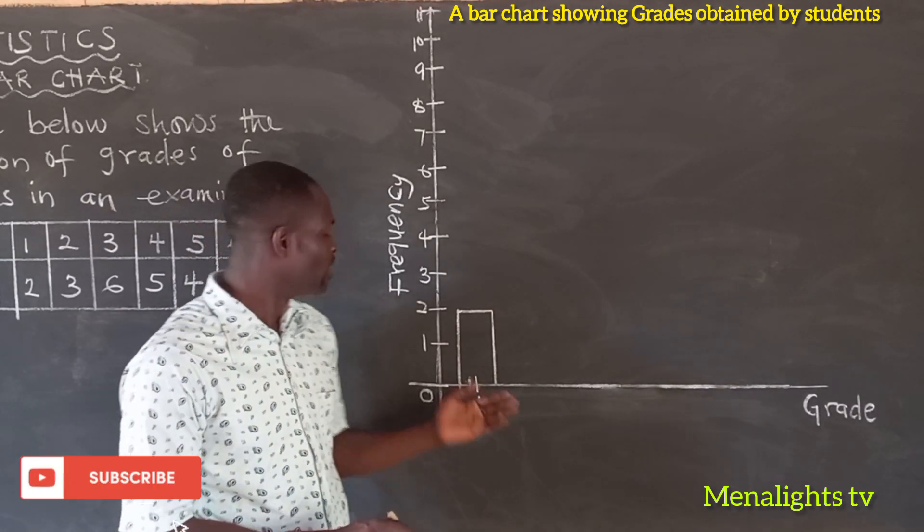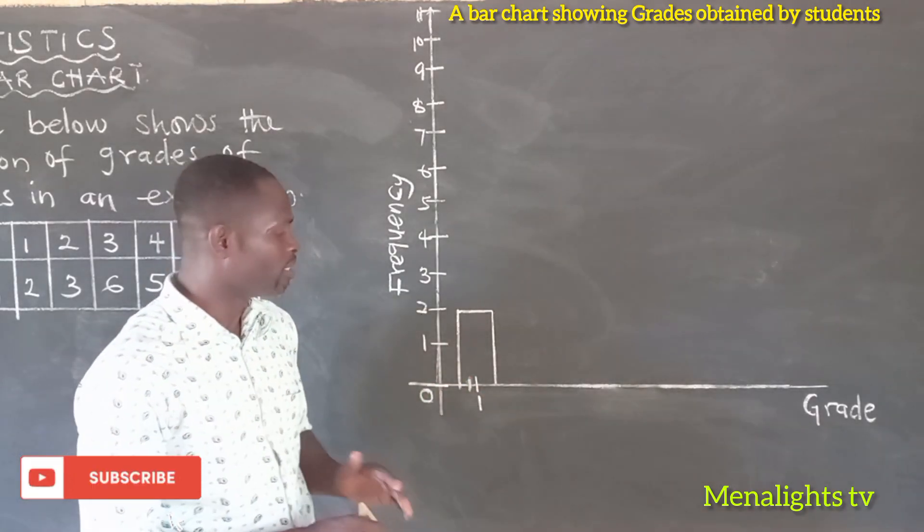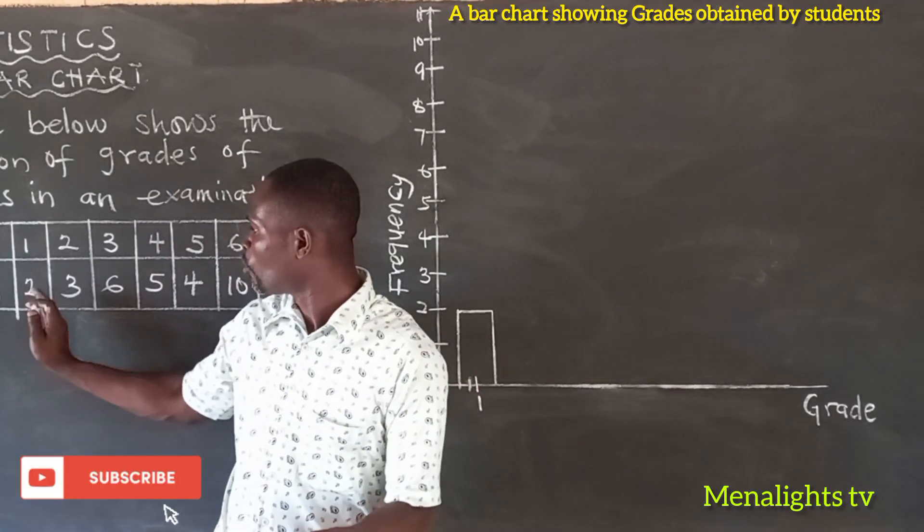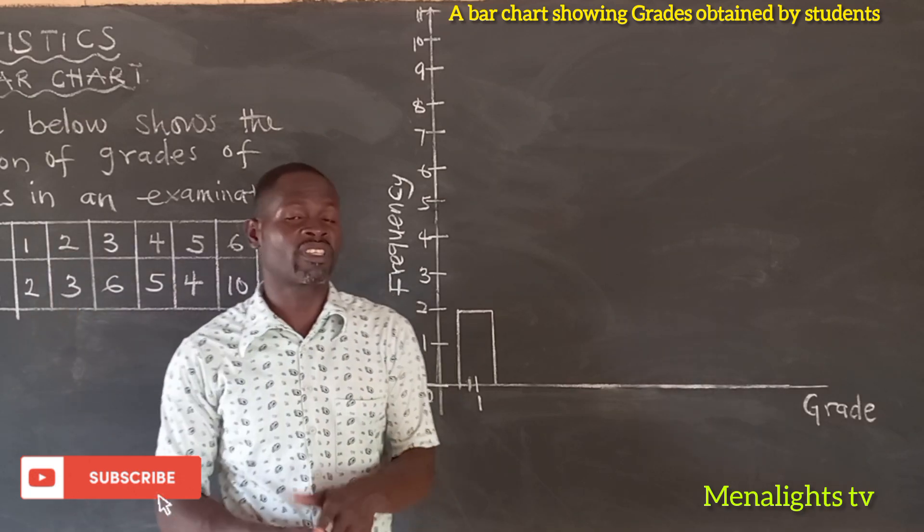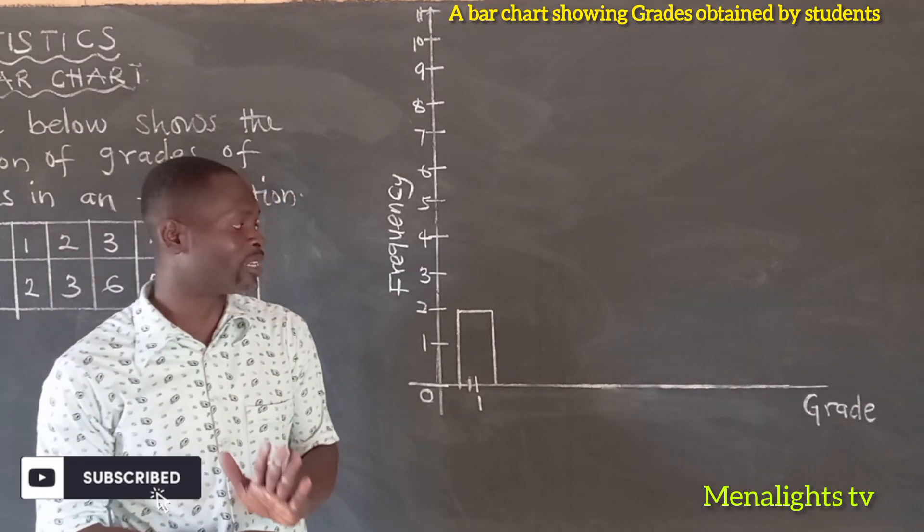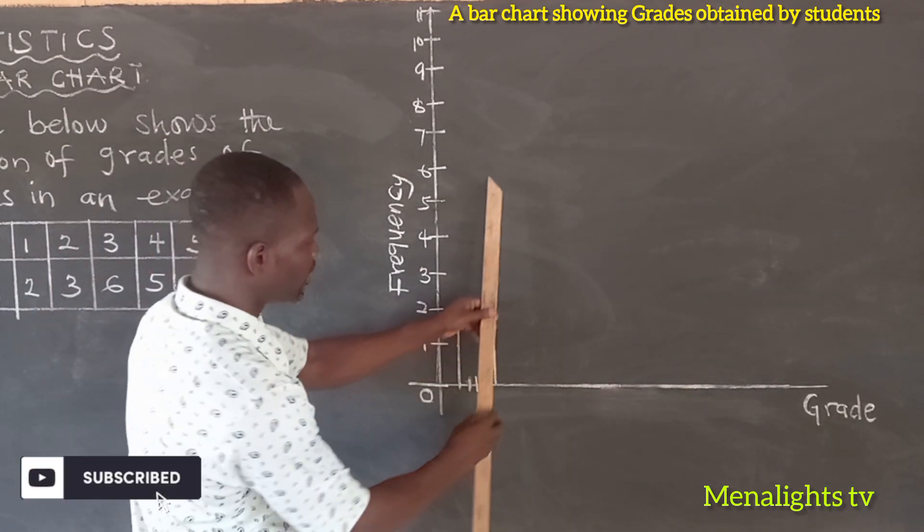Then we go to grade 2, which is 3. That means 3 students were obtaining the grade 2. So the same way.